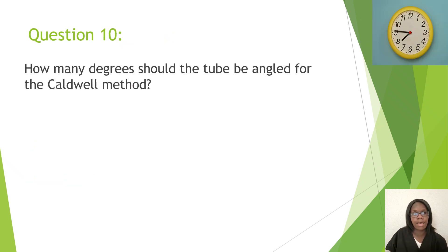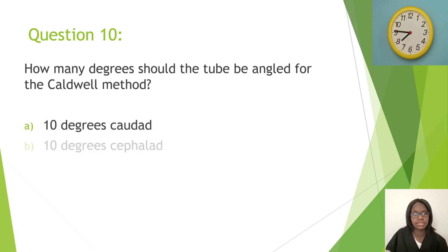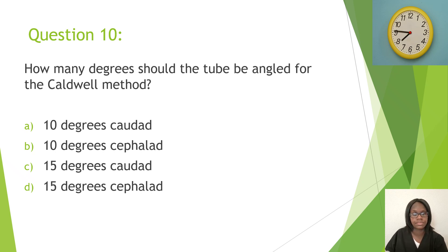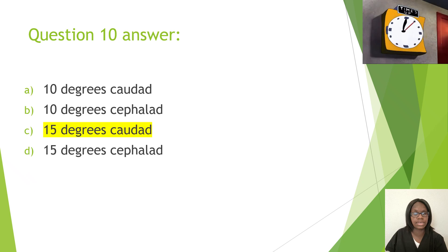Question ten: How many degrees should the tube be angled for the Caldwell method? A, 10 degrees caudad; B, 10 degrees cephalic; C, 15 degrees caudad; D, 15 degrees cephalic. The correct answer is C, 15 degrees caudad.